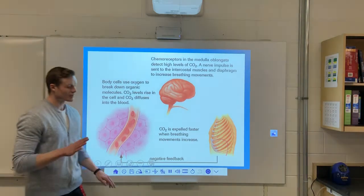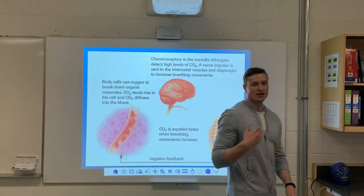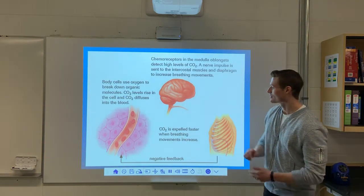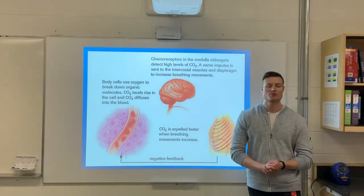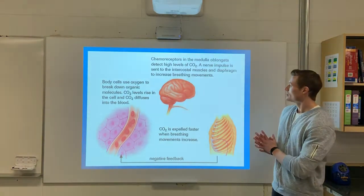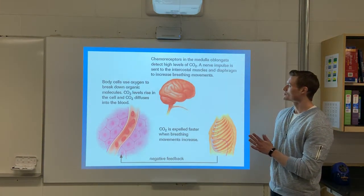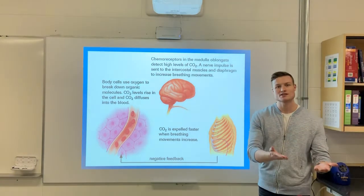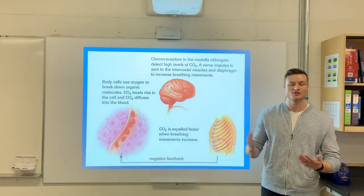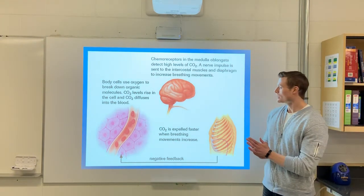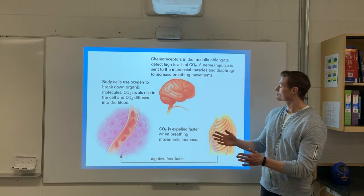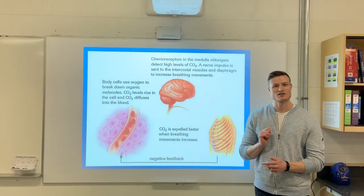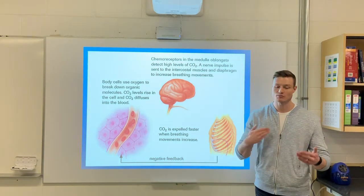Your chemoreceptors in your medulla oblongata — that area in your hindbrain — are your primary receptors. As the body uses oxygen to break down organic molecules, CO2 levels will rise. CO2 is a byproduct of cellular respiration, so as CO2 rises and diffuses into the blood, the chemoreceptors in the medulla oblongata will detect a high level of CO2, meaning the cells need more oxygen.